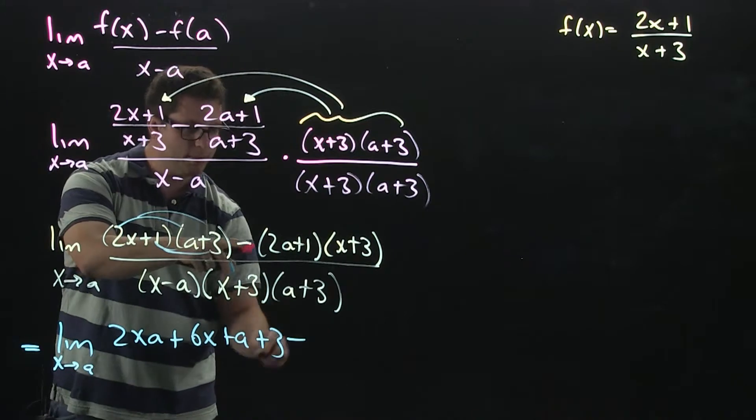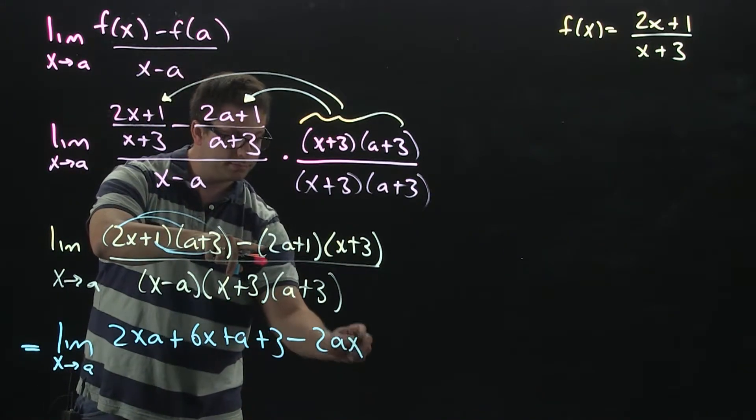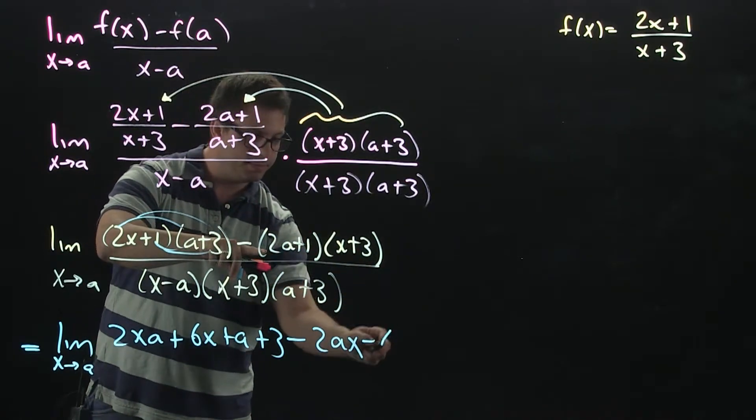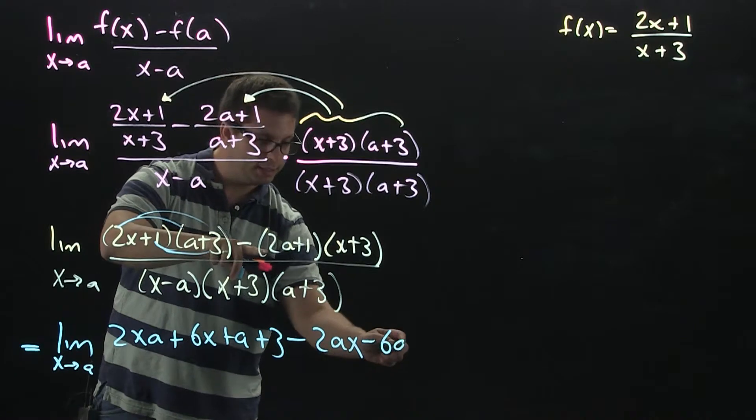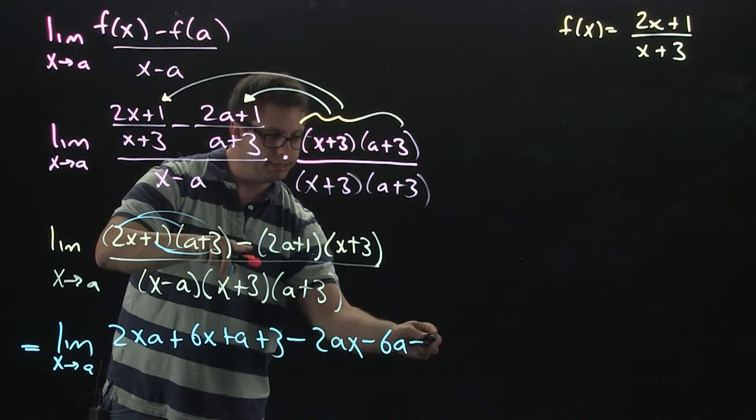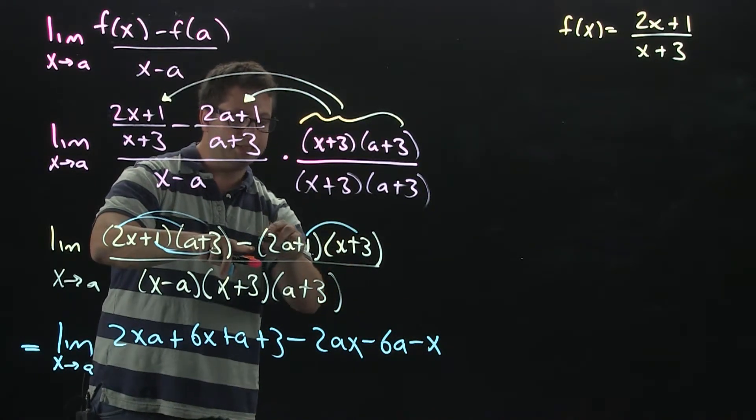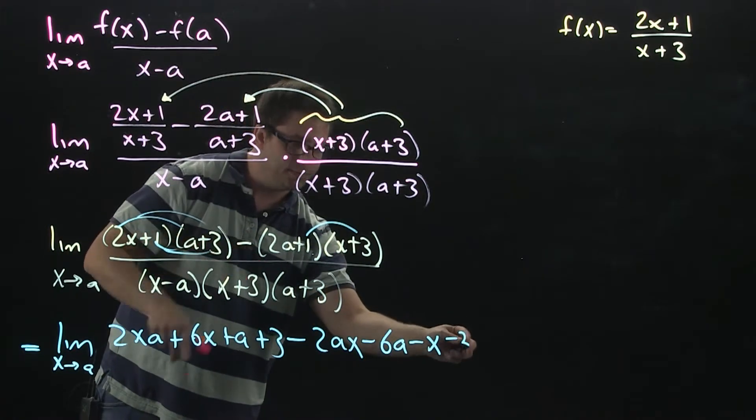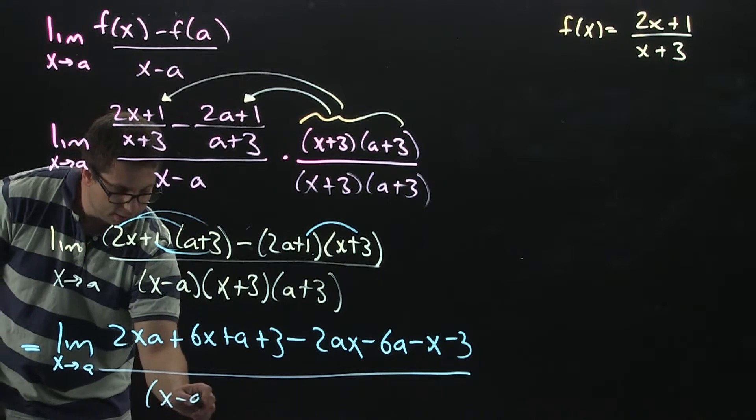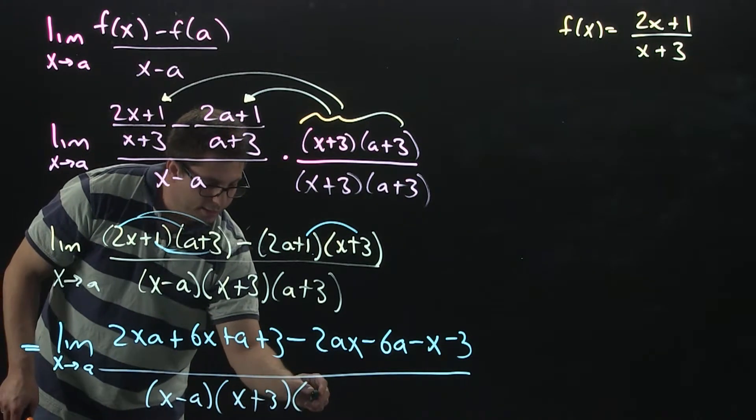And then over here, you're going to have a minus. So, you have 2ax. This will give me 6a, but because of the minus sign, I'm going to have to distribute to give me minus 6a. This will be a plus x, which then, after distributing the minus, it's minus x. And again, plus 3, but then the minus sign that I'm distributing to give me minus 3. All of that will be over the x minus a, the x plus 3, and the a plus 3.